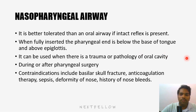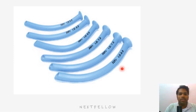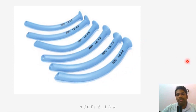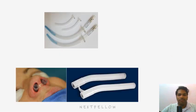Nasopharyngeal airways come in many sizes. The diameter chosen should be 0.5 to 1 size smaller than the endotracheal tube used for the patient — for example, if the patient is intubated with a size 7 ETT, choose a 6.5 nasopharyngeal airway; for an 8.5 ETT, choose size 8. Sizes are given in internal diameter ranging from 5.5 to 8 mm, or in French sizes from 22 to 32 French.